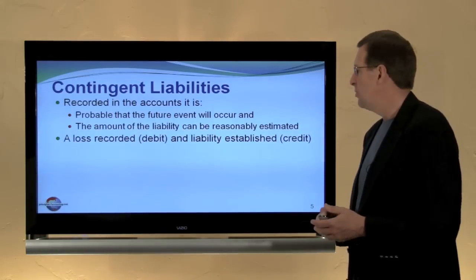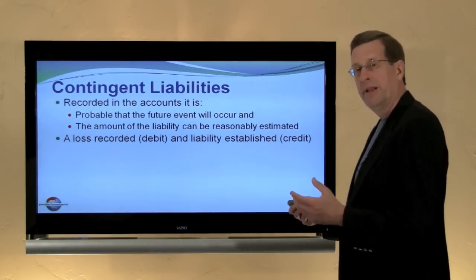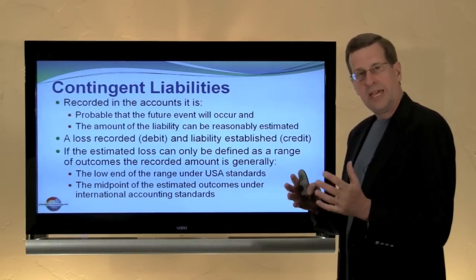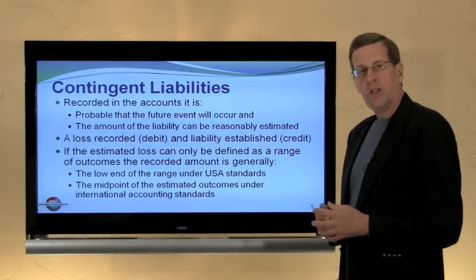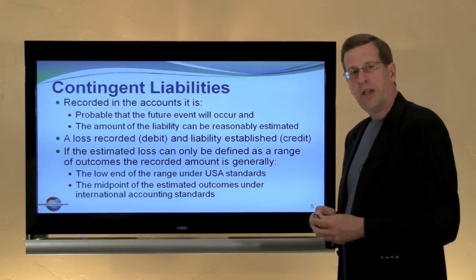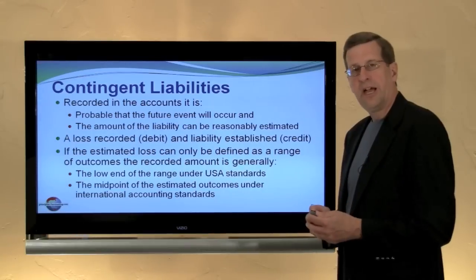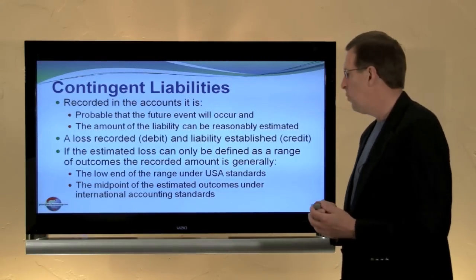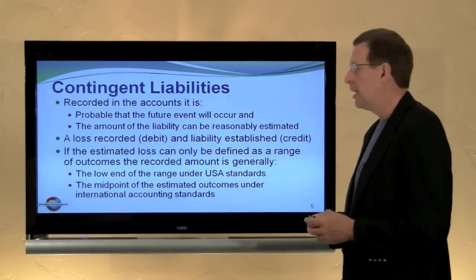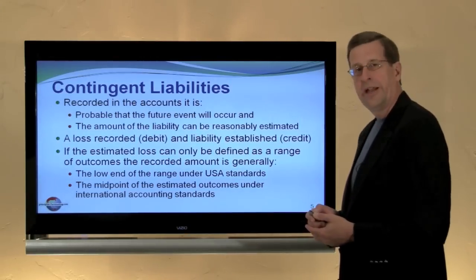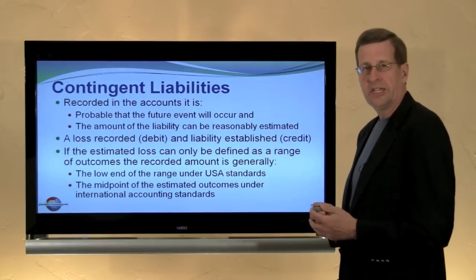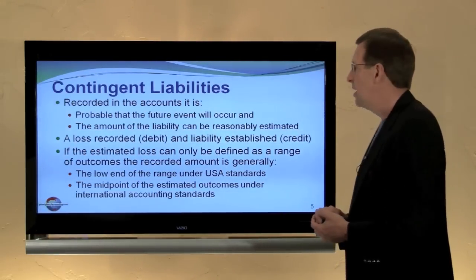In that case, a loss is recorded — debit to a loss — and a liability is established — credit a liability. If the estimated loss can only be defined as a range of outcomes and we can't identify a specific point estimate, then under US GAAP we generally record only the low end of the estimated liability. The midpoint is used for international accounting standards. One needs to be careful because the firm's risk can actually run much higher than the recorded amount.